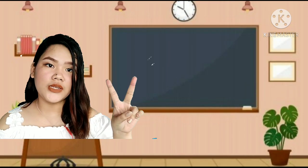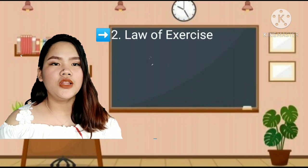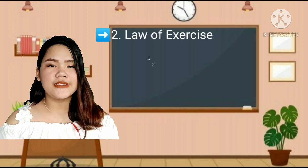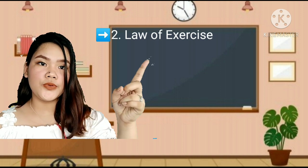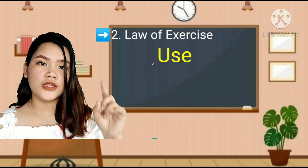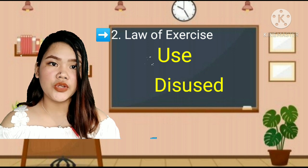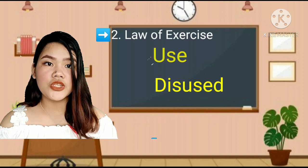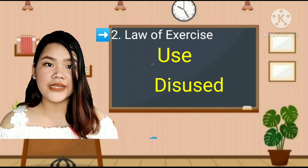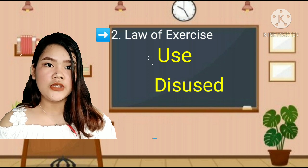The second is the law of exercise, which has two parts: the law of use and the law of disuse. This law states that a connection is stronger when used, where strength is defined as vigor and duration, as well as the frequency of its making.